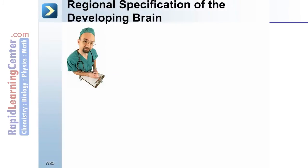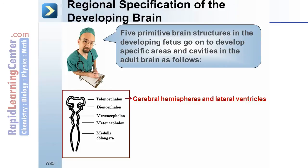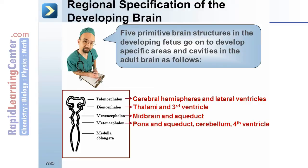We begin with a review of the regional specification of the developing brain. There are five primitive brain structures in the developing fetus that develop specific areas and cavities in the adult brain. The telencephalon develops into the cerebral hemispheres and lateral ventricles. The diencephalon becomes the thalami and the third ventricle. The mesencephalon becomes the brainstem and aqueduct, while the metencephalon develops into the pons, the cerebellum, and the fourth ventricle, and the myelencephalon becomes the medulla.